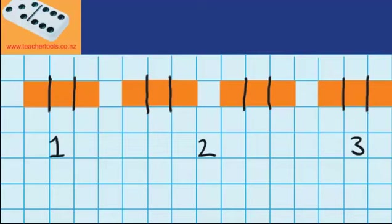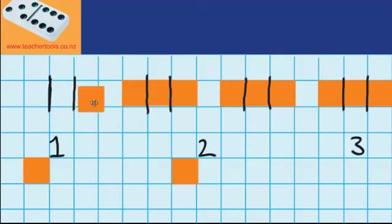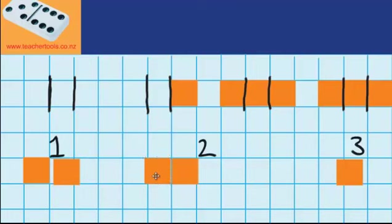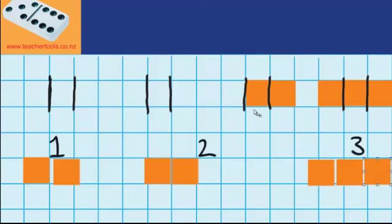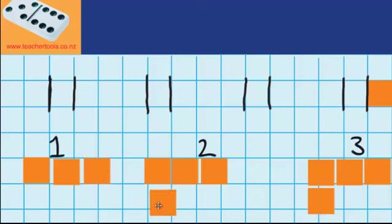So now I can share these out. From my first wafer I can give everyone 1 third, from my second wafer I can give everyone another third, from my third wafer I'll give everyone another third, and from my fourth wafer everyone gets one more third.